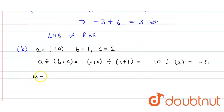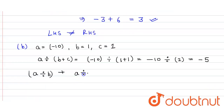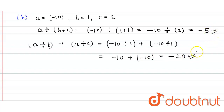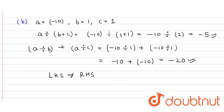Now on the right hand side, a divided by b plus a divided by c: we put a as minus 10 divided by 1, plus minus 10 divided by 1. When we solve it we get minus 10 plus minus 10, which equals minus 20. Here again we can see that the left hand side and the right hand side are not equal, so the given expression is verified. Hence this is our answer.